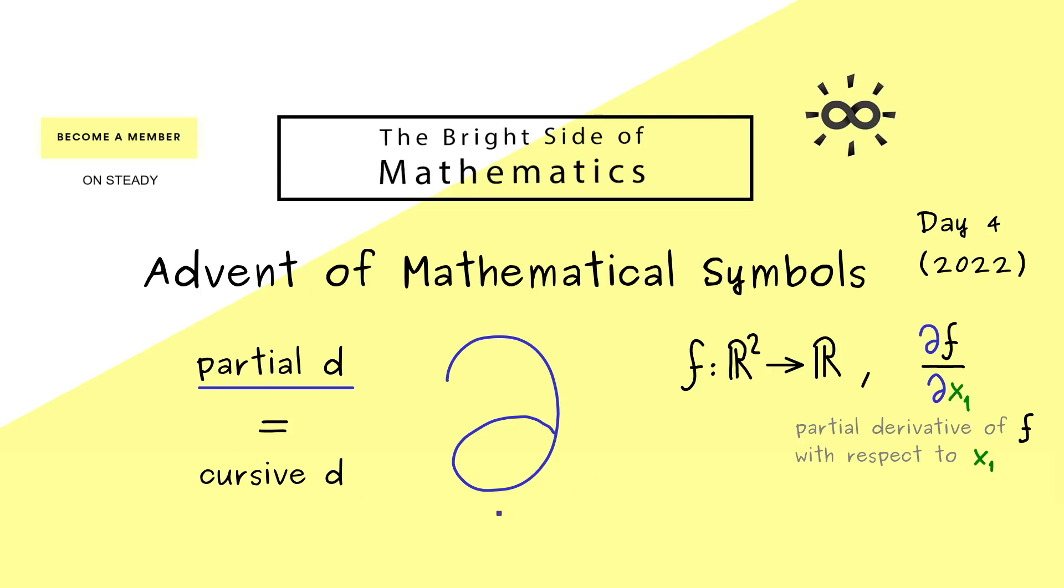However, our partial d here is also used in other contexts. So for example, in topology we talk about open and closed sets. And then it turns out that for each subset in a given space, we can define the so-called boundary of the set.